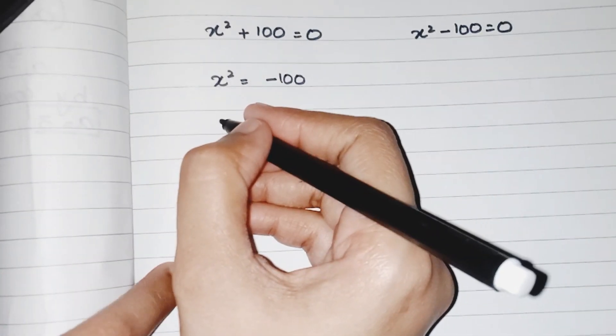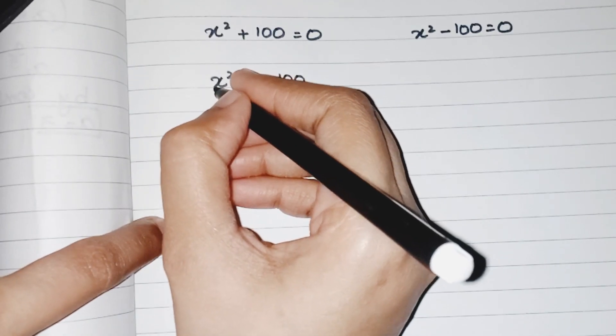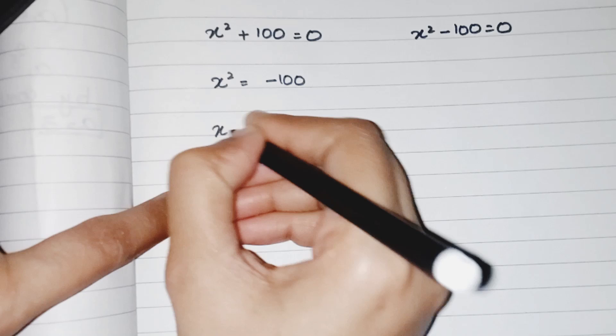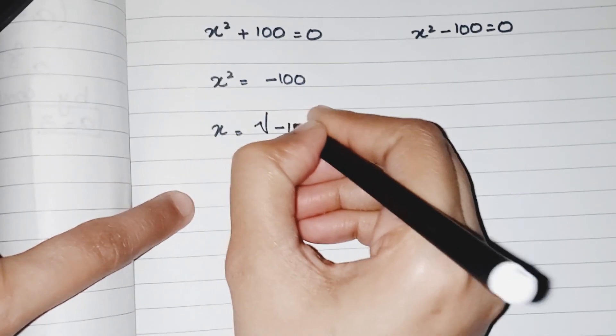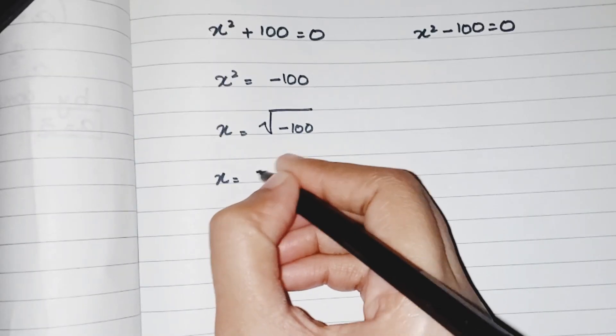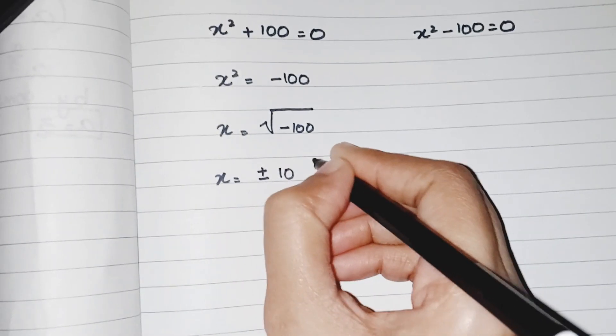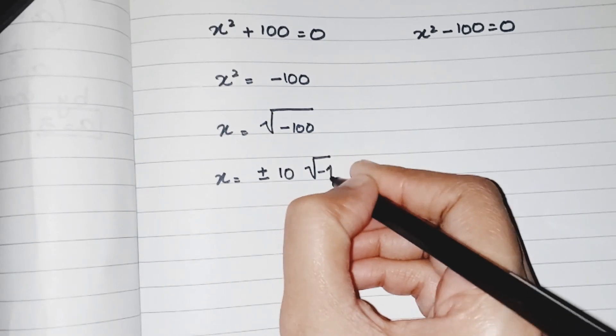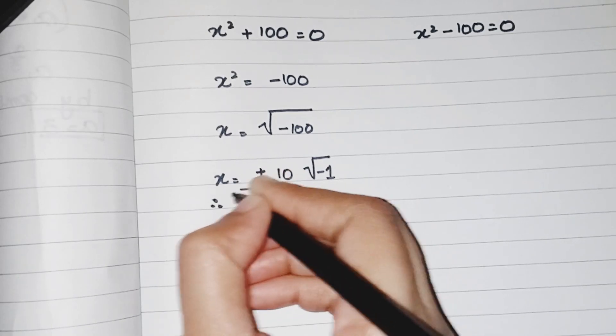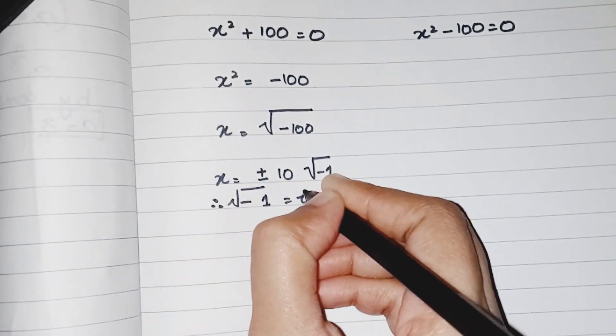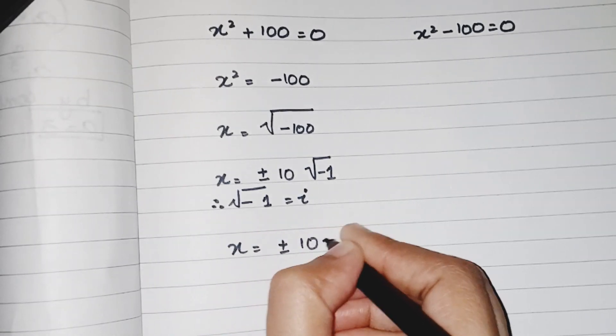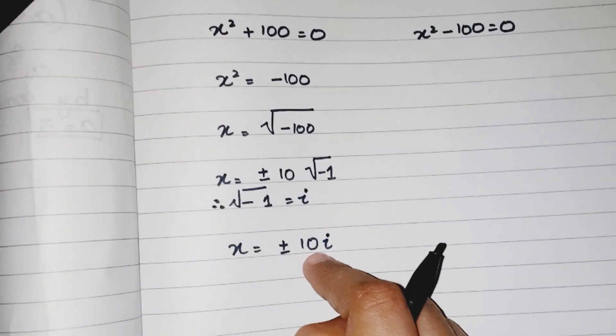For finding the value of x I have to remove this square, so we can say that x equals square root of minus 100. Then it will be written as square root of minus 1 times 100, and we know that square root of minus 1 is equals to i. So I can say that x equals plus minus 10i.